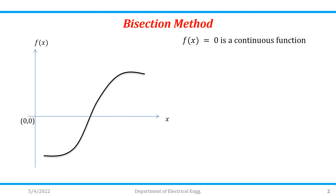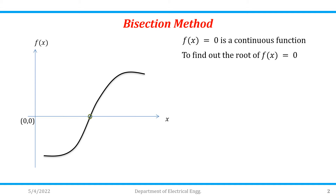Consider f(x) = 0 as the continuous function. For this particular equation, we have to find out the root. The root is that point of the curve which satisfies the equation — meaning, by substituting that value in the equation, we will get f(x) = 0.